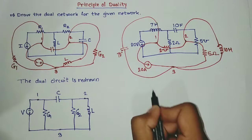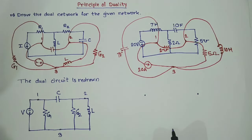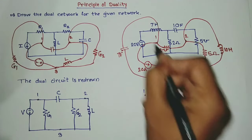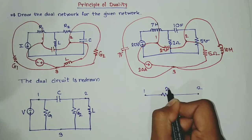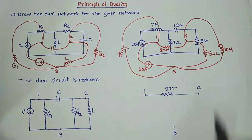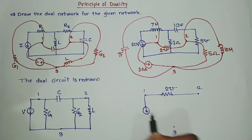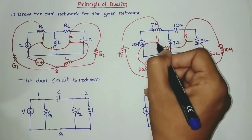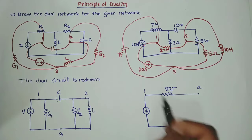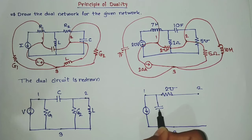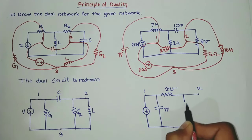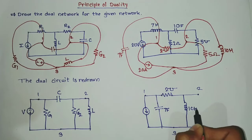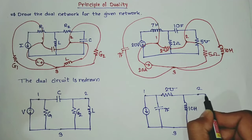Therefore the circuit can be redrawn like this. This is our node one, node two, and node three. In between node one and two there is a two mho conductance. In between one and three there is a current source, and also a seven farad capacitor. In between two and three a ten henry inductor is there, and a five ohm resistance is also there.